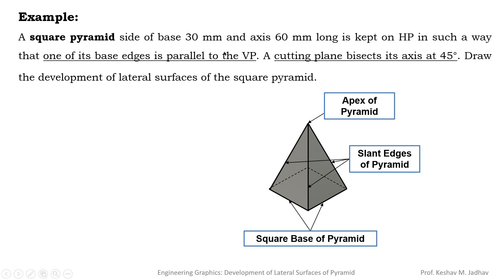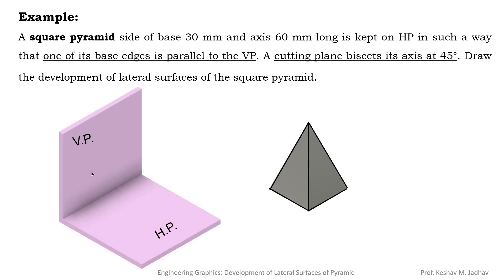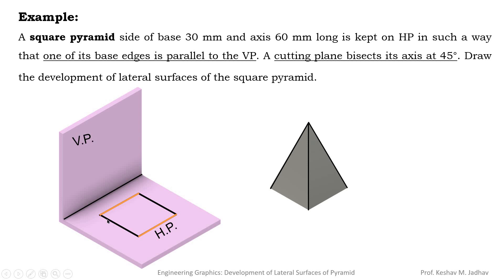In this example, the dimensions of the square pyramid are given. The base is 30 mm, meaning the side of the base is 30 by 30 mm. The axis length given is the height of this pyramid. It is kept on a horizontal plane such that one of its base edges is parallel to the vertical plane. So two lines of the square base will be parallel to the vertical plane and the other two lines will be perpendicular to it.